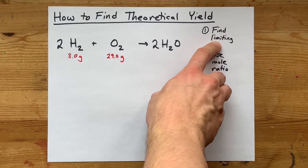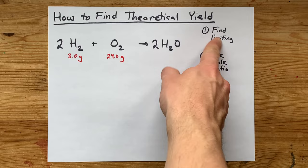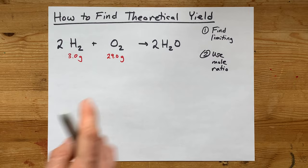Step one, you're going to have to figure out which of the reactants are limiting. Here I have hydrogen, three grams of it, and oxygen, 29 grams of it. And the question here is which one runs out first? Because once one of them runs out, your reaction stops. So step one, find the limiting reactant.